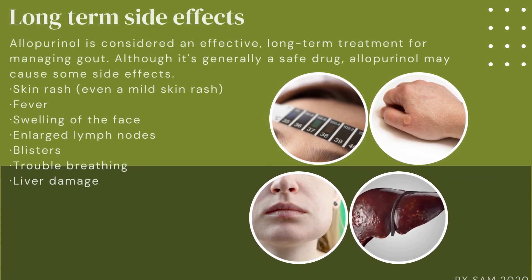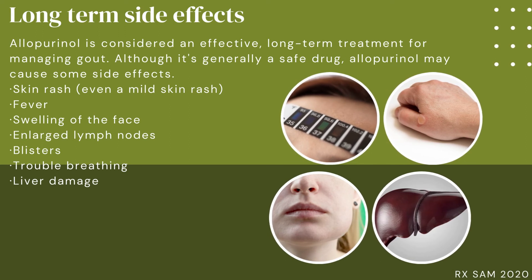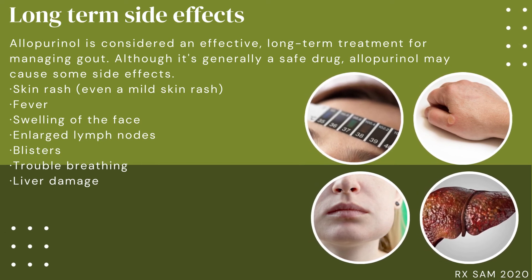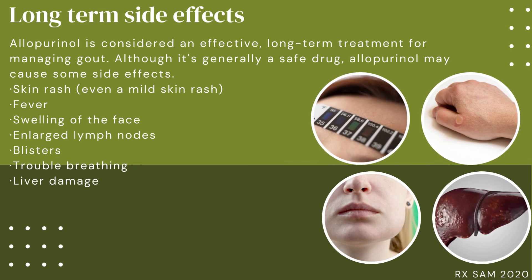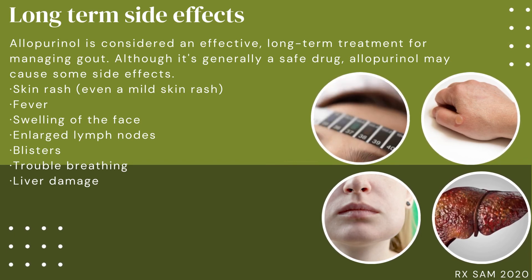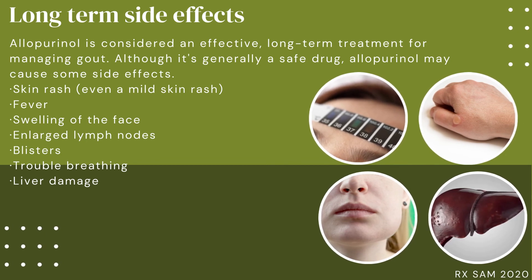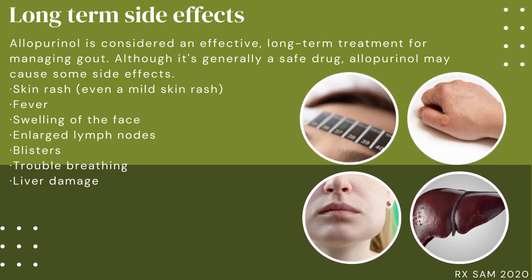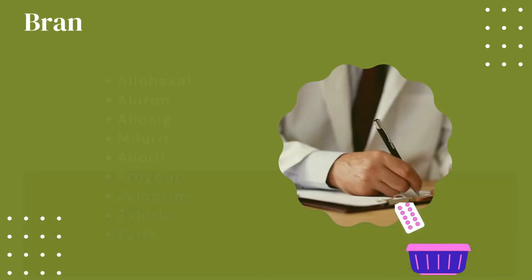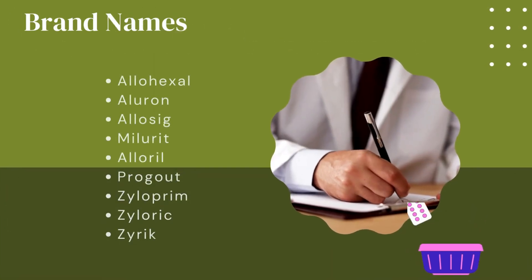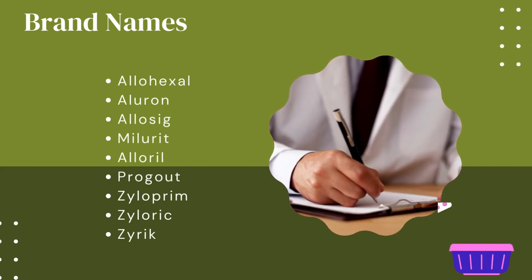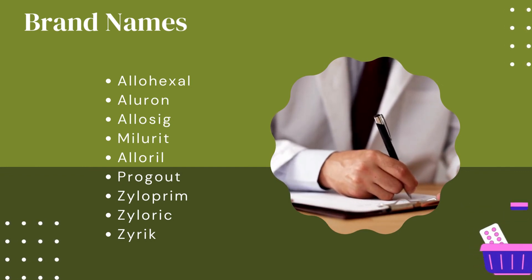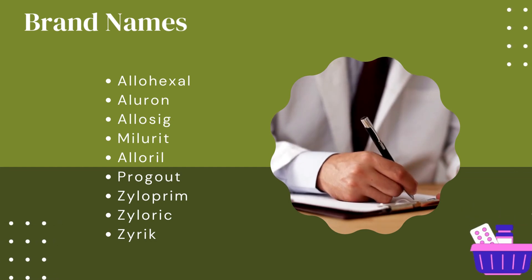Long-term side effects: Allopurinol is considered an effective long-term treatment for managing gout. Although it's generally a safe drug, allopurinol may cause some side effects including skin rash, fever, swelling of the face, enlarged lymph nodes, blisters, trouble breathing, and liver damage. Some brand names available in the market include Allohexal, Alluron, Allosig, Miluric, Alloril, Prokout, Xylocrim, Xyloric, and Xiric.